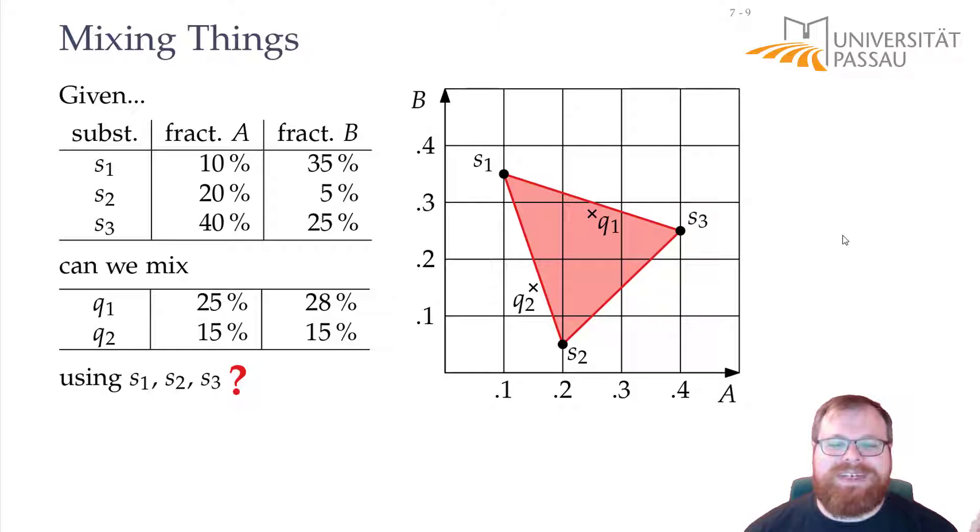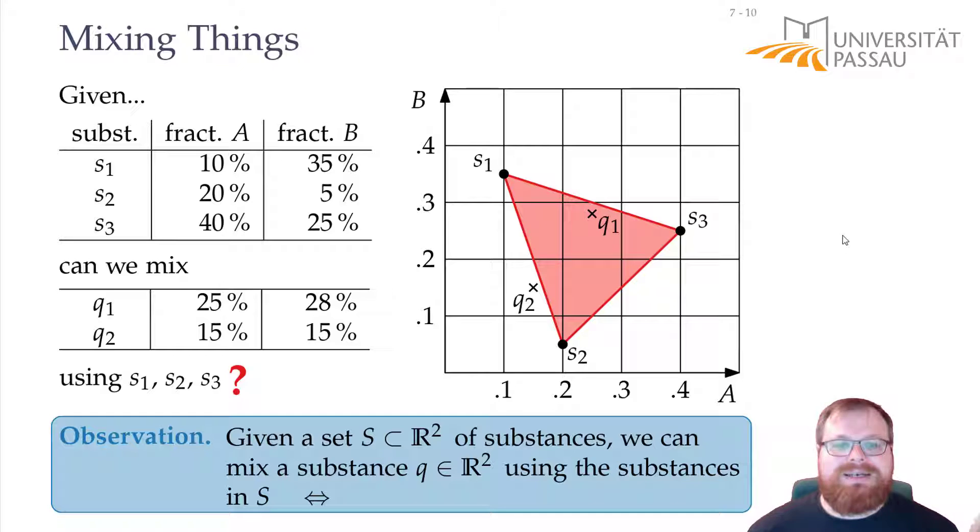This gives us our very first observation. If we have a set of substances, then we can mix a new substance using those substances we are given, if and only if the point that corresponds to the new substance lies in the convex hull of S. If we have more than three points, let's say a fourth, then the convex hull would look like this. And if we have another point inside, it doesn't contribute to the convex hull. Still this quadrilateral is our convex hull.